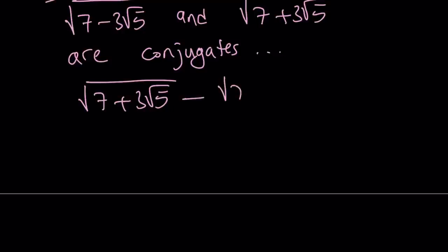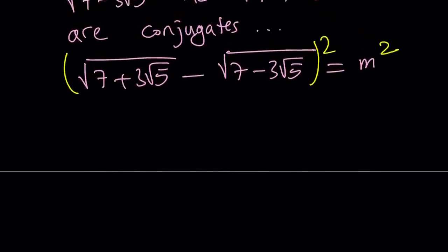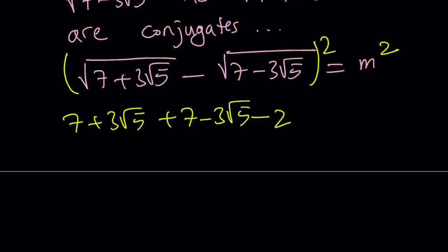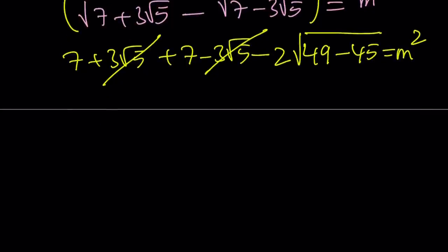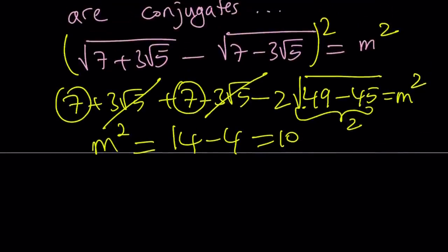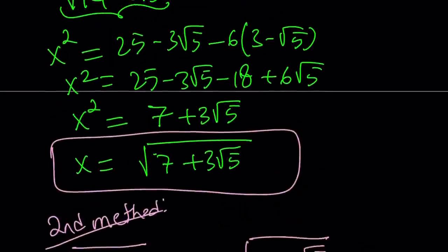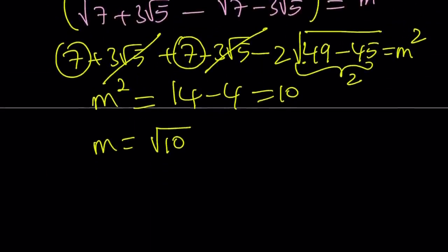Let's start with the difference, using the greater one first. Call this m and square both sides using the (a minus b) squared formula. We get 7 plus 3 root 5 plus 7 minus 3 root 5 minus 2ab. The 2ab term gives the product of two conjugates: the square root of 49 minus 45, since 9 times 5 is 45. The 3 root 5 terms cancel, leaving m squared equals 14 minus 4 equals 10, so m equals root 10. But since our original expression has 3 root 2, this difference didn't give us what we need.